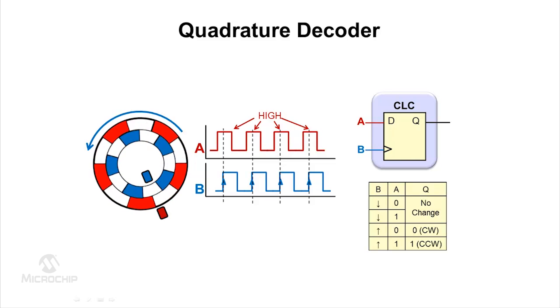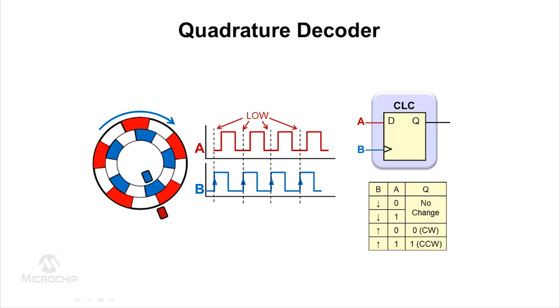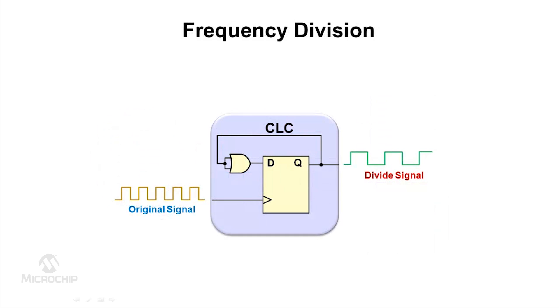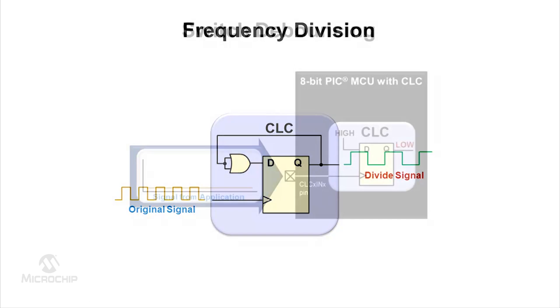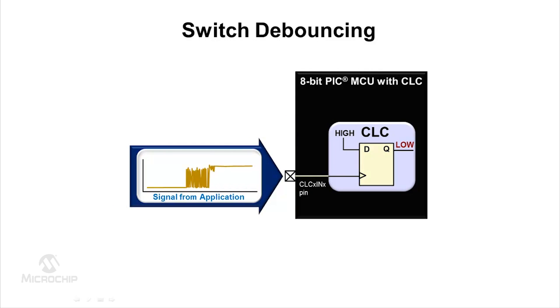Microchip technology has prepared a CLC tips and tricks guide that provides sample applications including how to quickly create a quadrature decoder, add propagation delay or frequency division to fine-tune system signals, or reduce code complexity while gating timers or by implementing a hardware-based switch debounce.